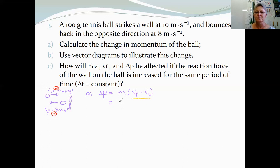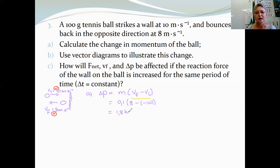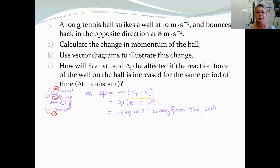The ball's mass is given in grams — 100 grams — and we need to convert that to kilograms: 100 divided by 1000 gives 0.1 kg. The final velocity is 8 m/s, minus the initial velocity which is −10 m/s in this case. So we see that there is a change in momentum of 1.8 kilograms meters per second. The positive answer indicates that it is moving away from the wall, so the net force acting on the tennis ball is in that direction — that is the direction of F-net on the ball.